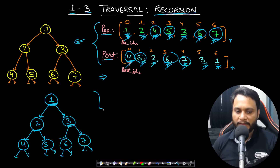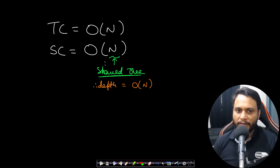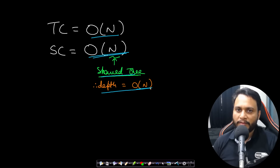We are traversing the entire tree exactly once — each node is visited three times, but three times N is still O(N). Therefore the time complexity is O(N). The space complexity is also O(N) because you can have a skewed tree where the recursion call depth can go to O(N).